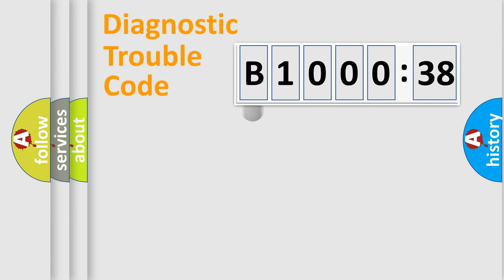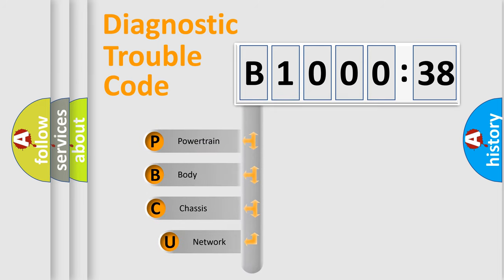First, let's look at the history of diagnostic fault code composition according to the OBD2 protocol, which is unified for all automakers since 2000. We divide the electric system of the automobile into four basic units.